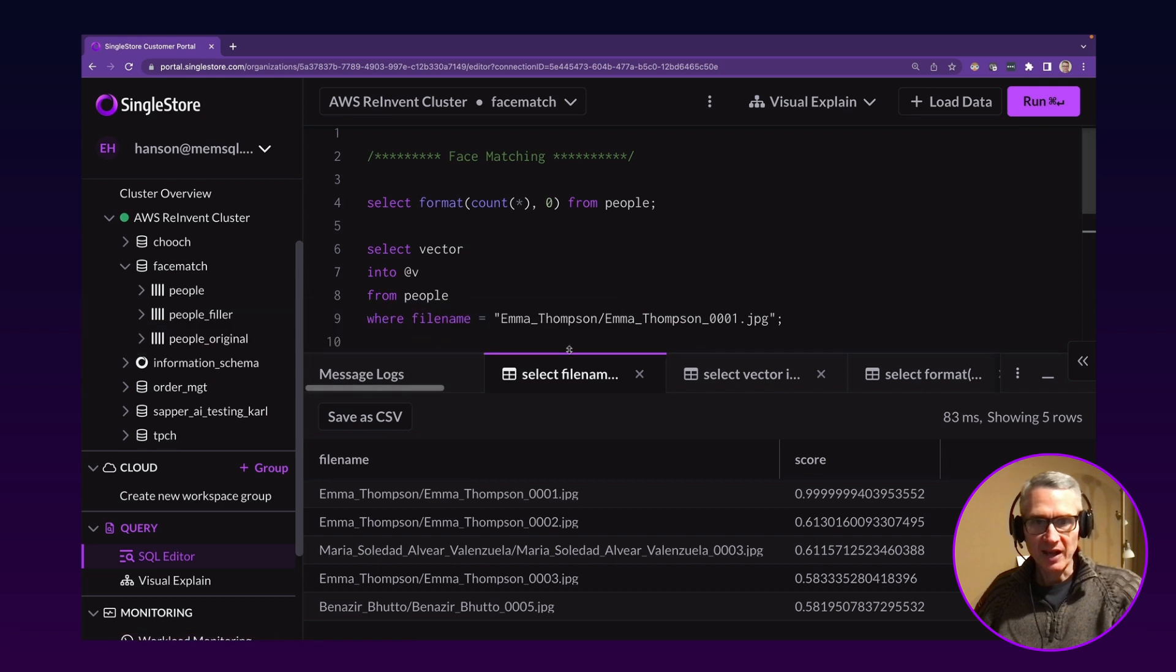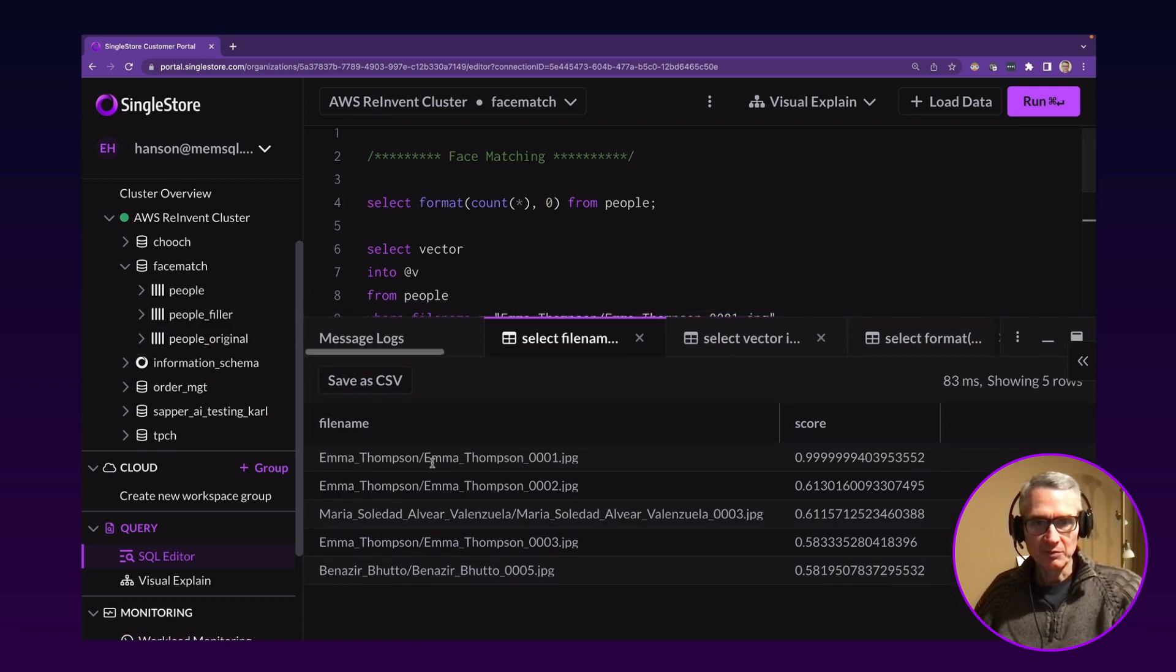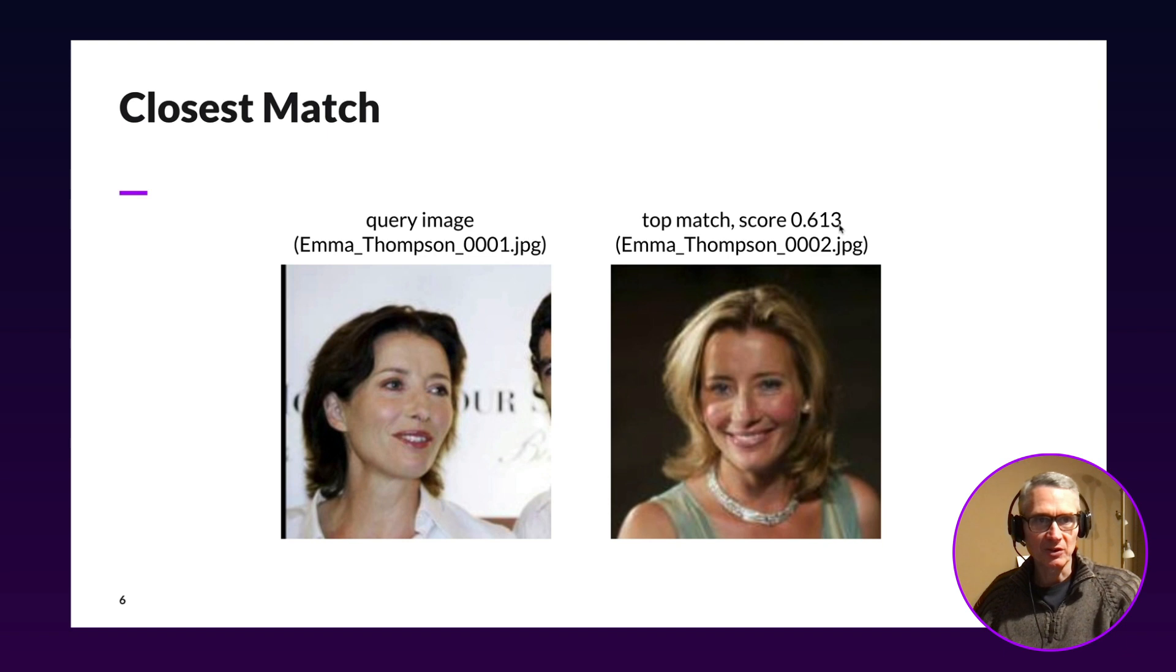And let's look at the output. The top match is Emma Thompson one. So the vector matched itself perfectly, which is what you'd expect. But the next closest match is Emma Thompson two. And so let's actually look at those pictures to see what they're like.